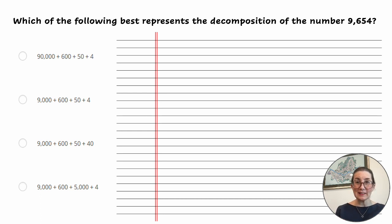So let's look at the number again. We've got 9 in the thousands place, 6 in the hundreds place, 5 in the tens place, and we have 4 in the ones place. Now let's look at our options.